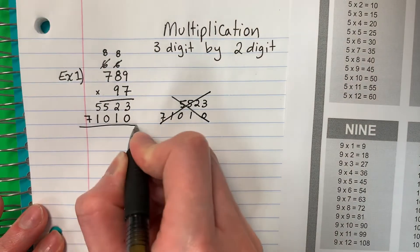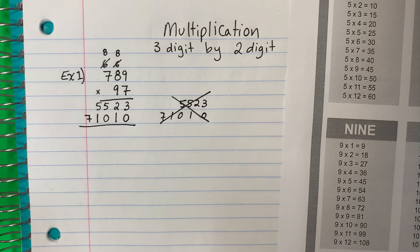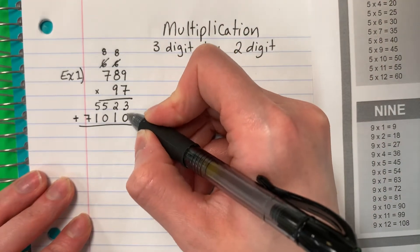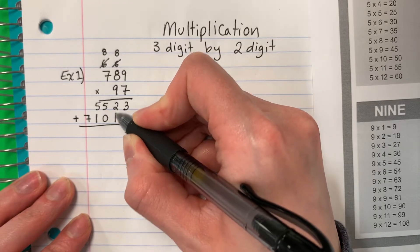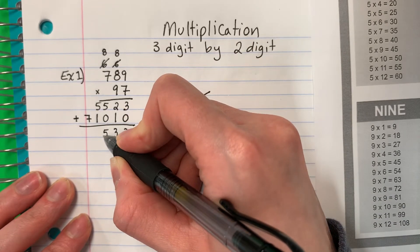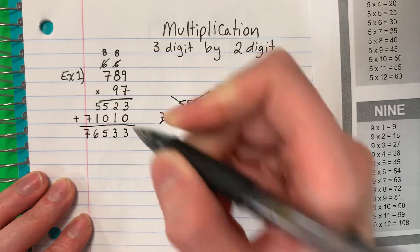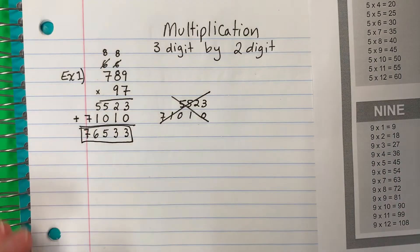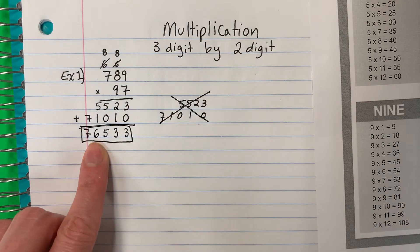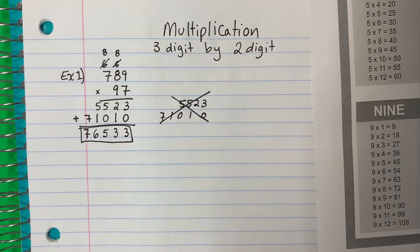All right. Now I have two sets of answers here. Ahora tengo dos como respuestas. But I need to add them. Necesito sumar. Three plus zero is three. Two plus one is three. Five plus zero is five. Five plus one is six. And seven. This is my answer. Esta es mi respuesta. Please circle your answer. Por favor, encierra su respuesta. My answer is 76,533. Mi respuesta es 76,533.